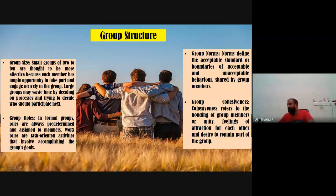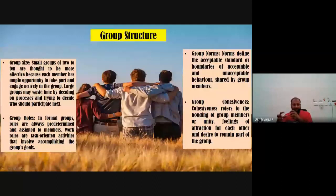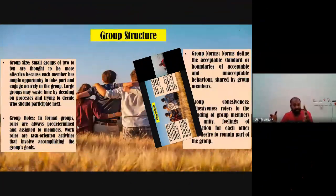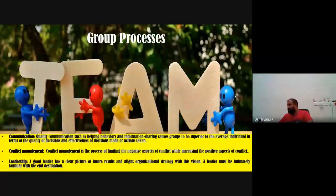Group roles: in formal groups, roles are always pretty well determined. As a leader, we can assign work based on what each member can do. If I don't want to follow the HOD's directions and fight with the HOD, it may affect the closeness of the department. We have to give respect to the head — when they assign work and norms, we have to follow them properly. Group cohesiveness — the feeling of unity — also affects group dynamics.